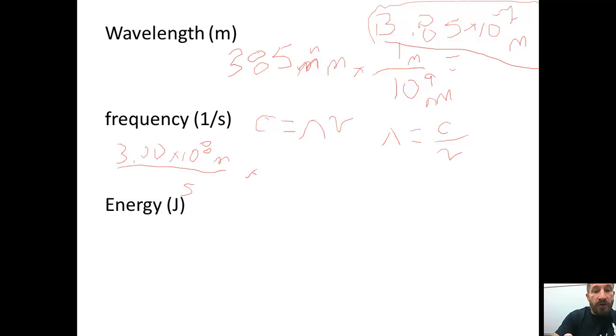We're going to multiply that by 1 over the frequency, or 1 over the wavelength, because we want the meters to cancel. So we're going to say 1 over the wavelength we just found, which is 3.85 times 10 to the minus 7 meters. You should calculate these on your own and make sure you're getting the same values.